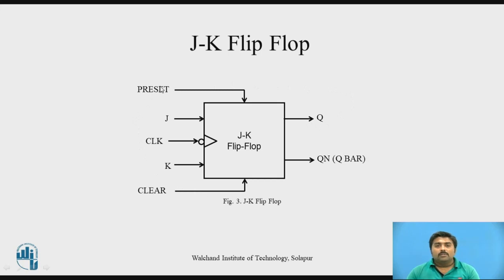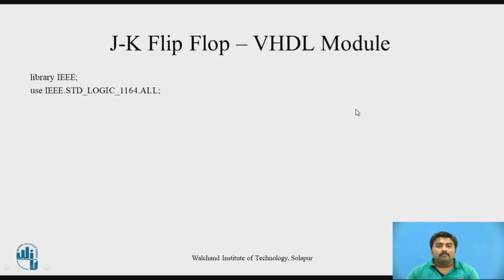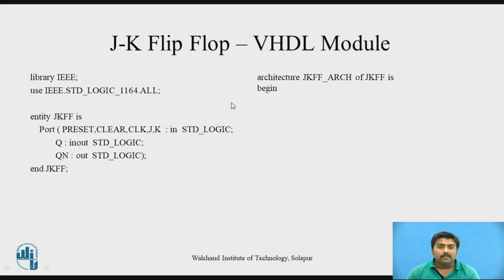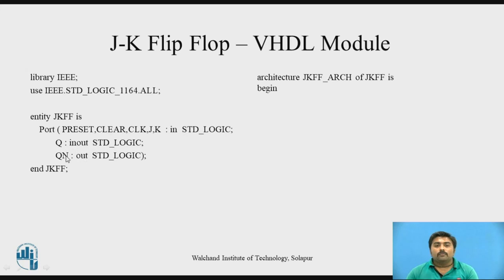For the VHDL module of the JK flip-flop, the same three parts apply: library declaration, entity, and architecture. The entity port declaration has inputs preset, clear, clock, J, and K as STD_LOGIC, and outputs Q and Q-bar. Note that Q is declared as 'inout' because to generate Q-bar you need to use Q as an input in the architecture.